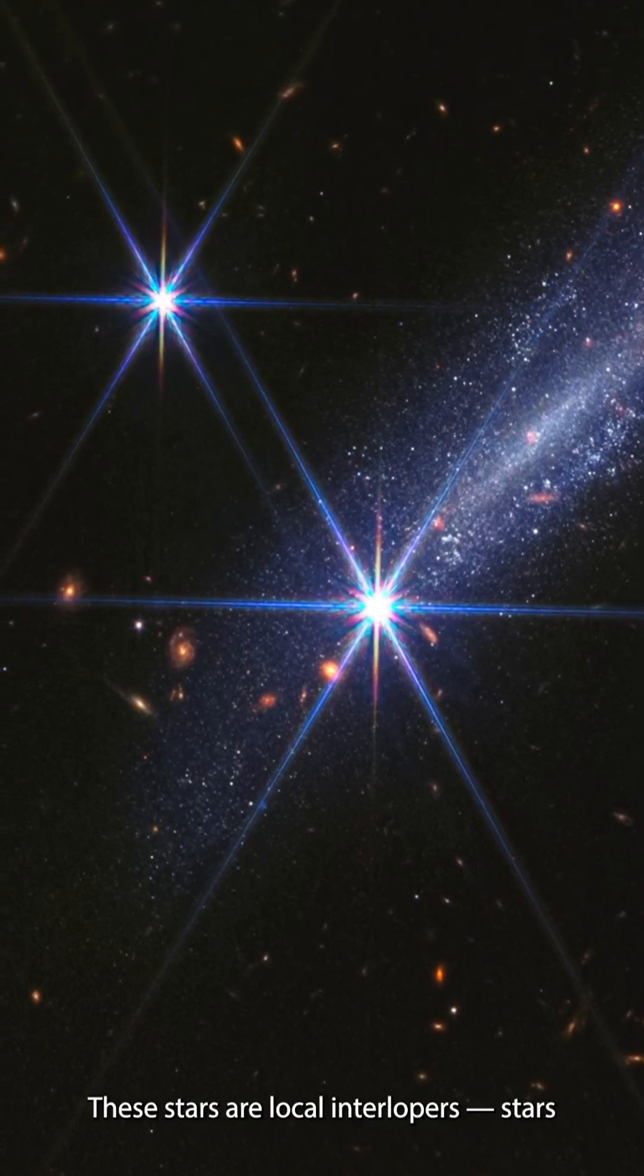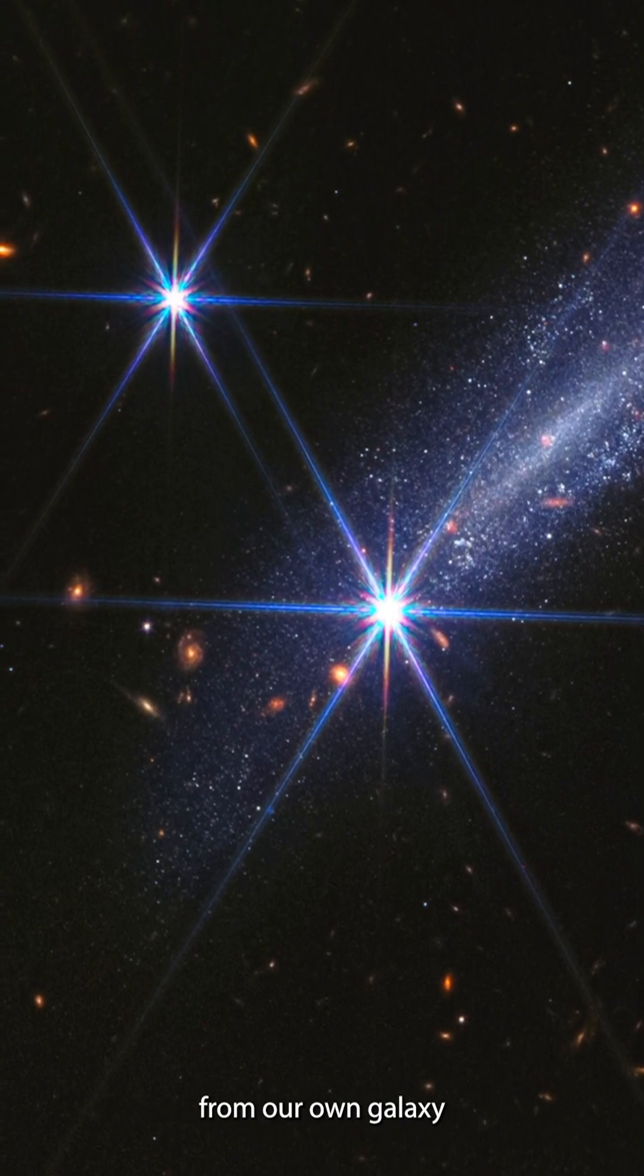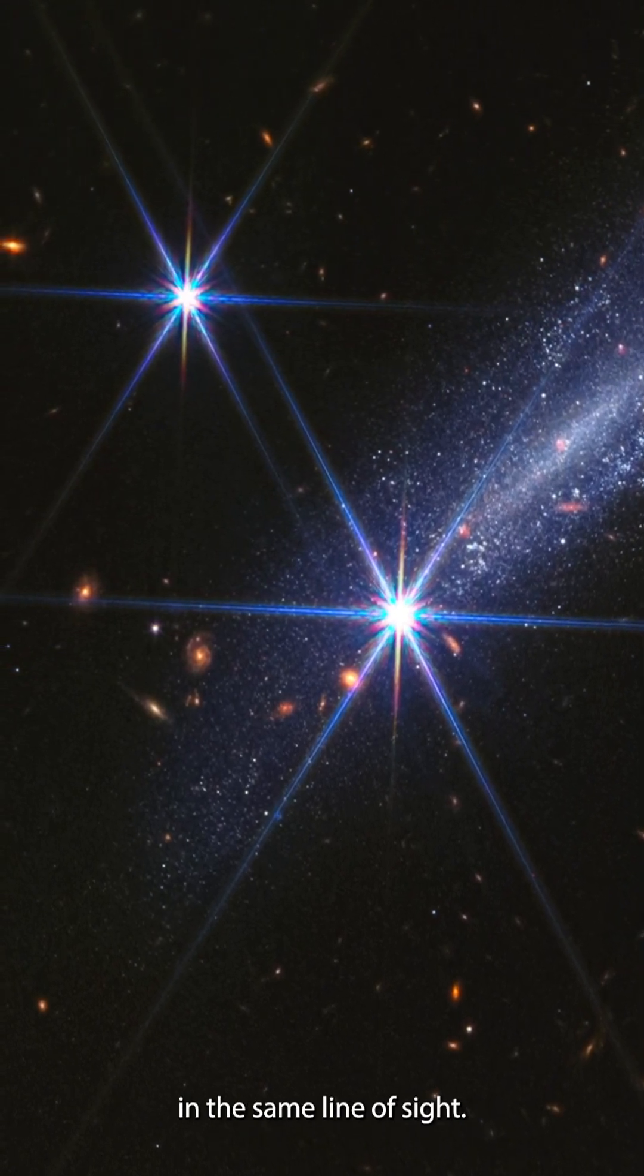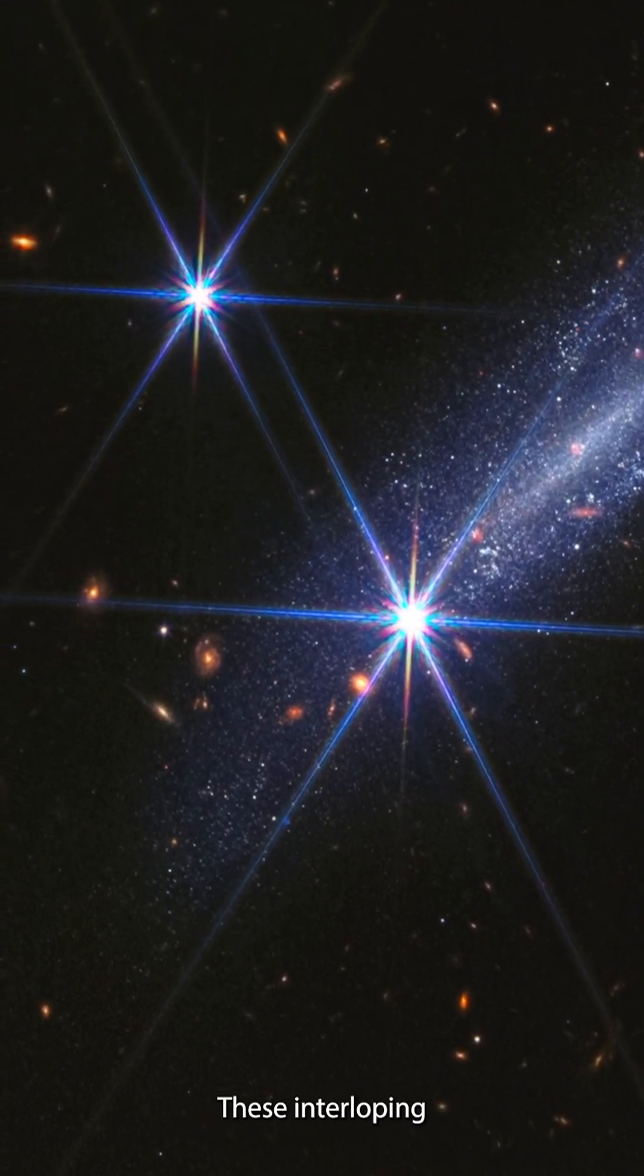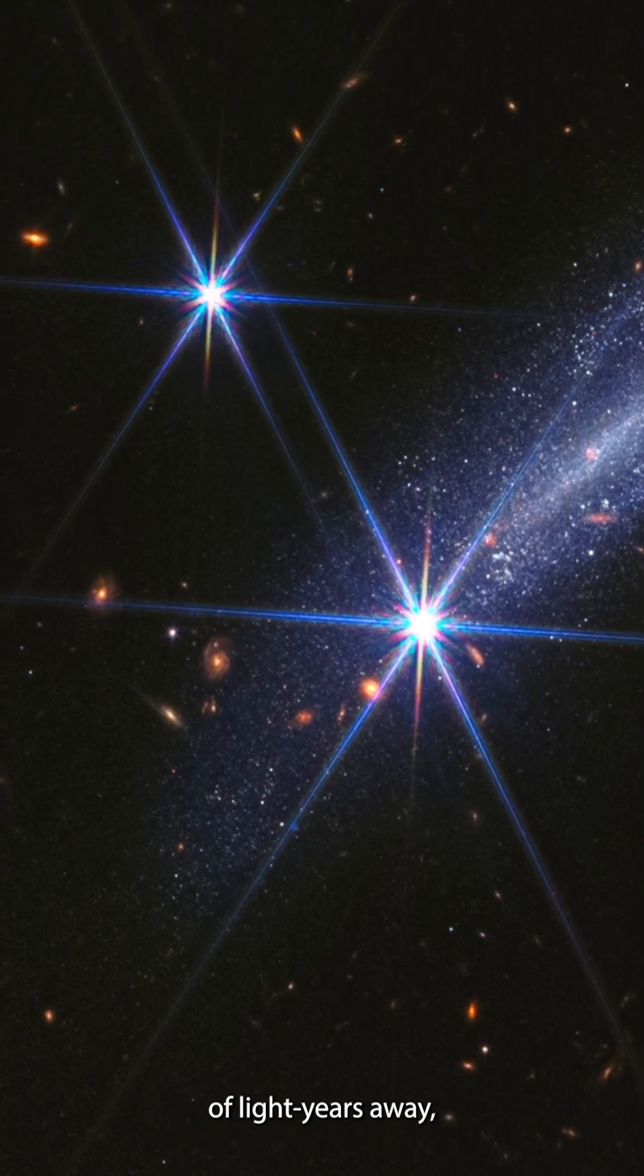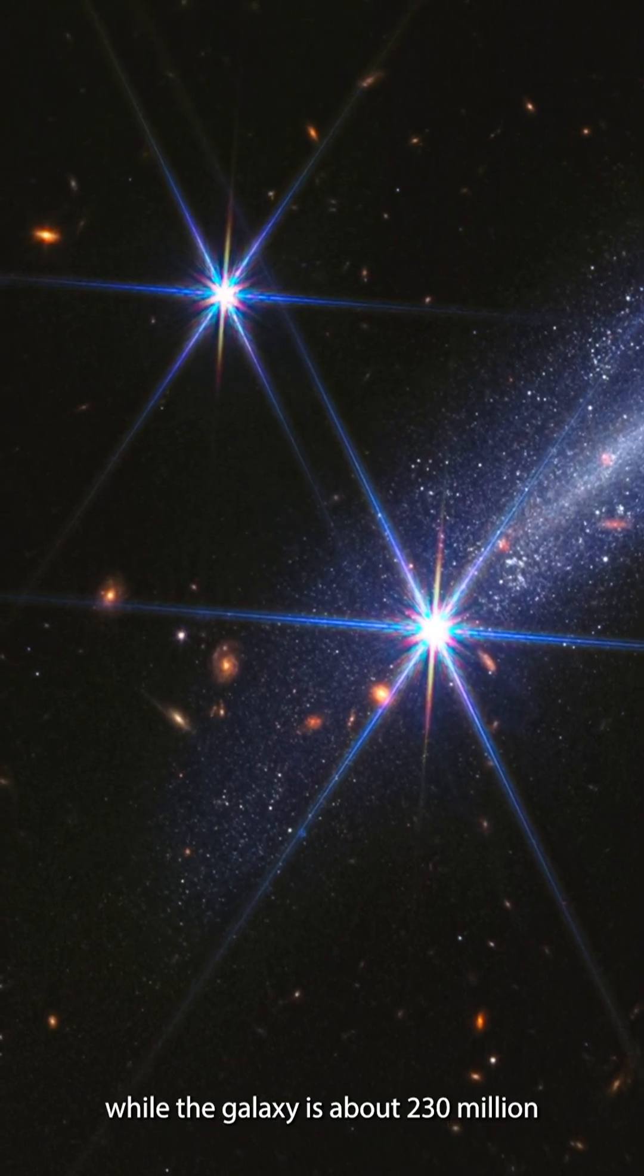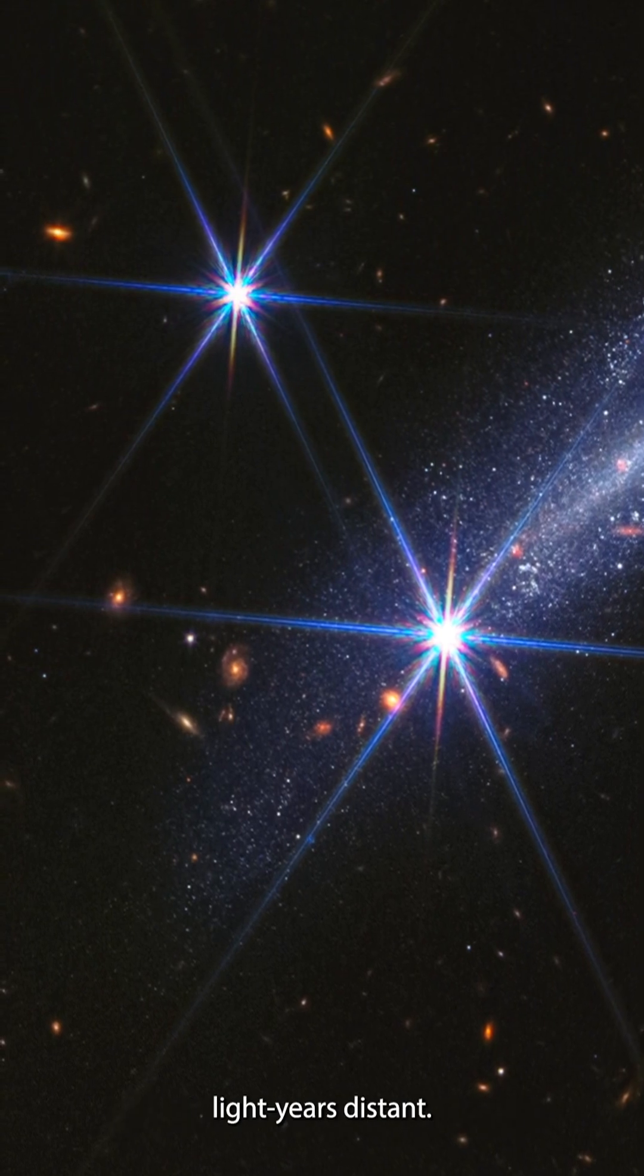These stars are local interlopers, stars from our own galaxy that just happen to be in the same line of sight. These interloping stars are only thousands of light-years away, while the galaxy is about 230 million light-years distant.